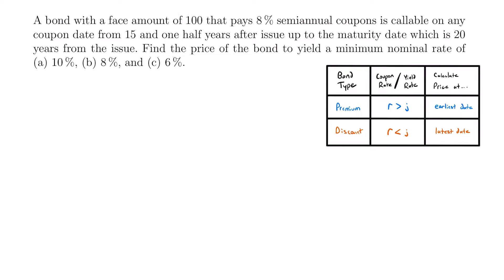We're going to calculate the price when the yield rate is a nominal rate of 10%, 8%, and 6%. For each yield rate, the way we calculate the price of this callable bond is slightly different, and it can all be summed up by this table. If our coupon rate is greater than our yield rate — meaning the bond would be bought at a premium — then we want to calculate the price at the earliest date possible, right as soon as the bond is callable.